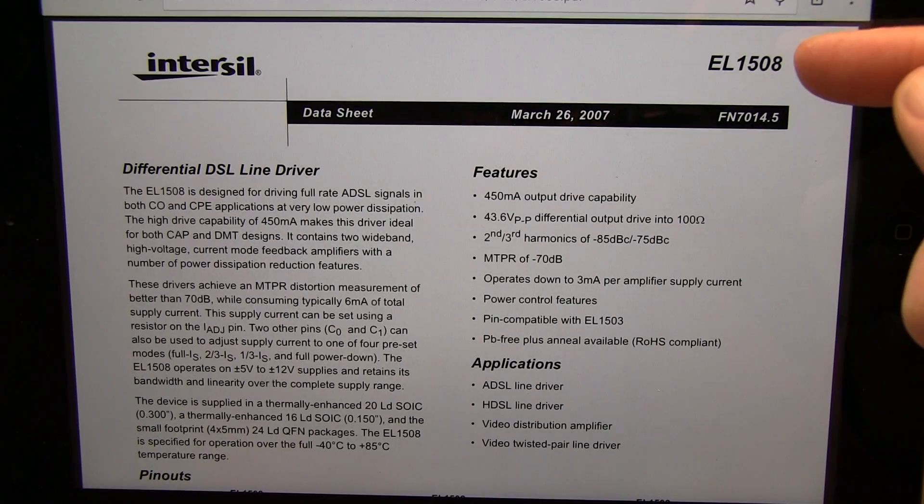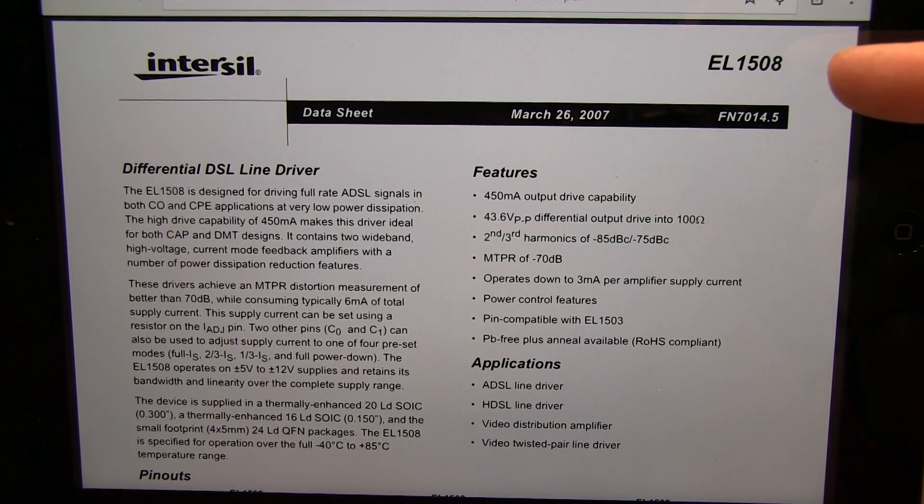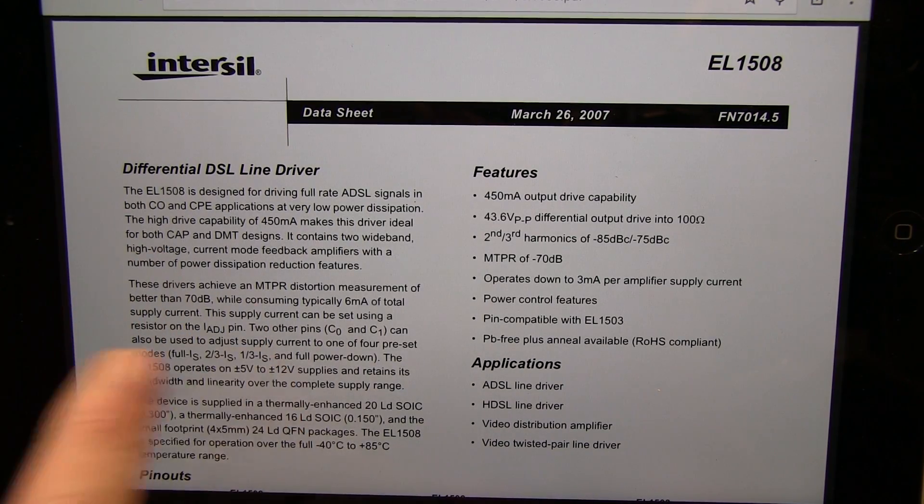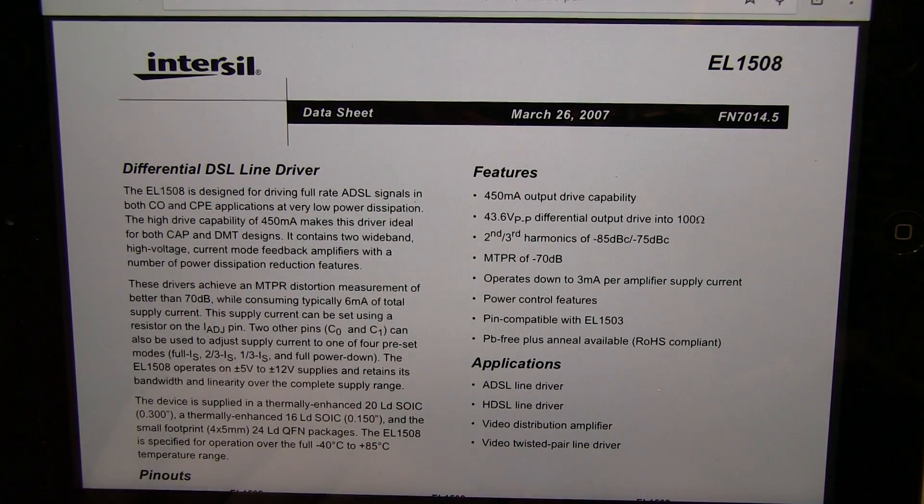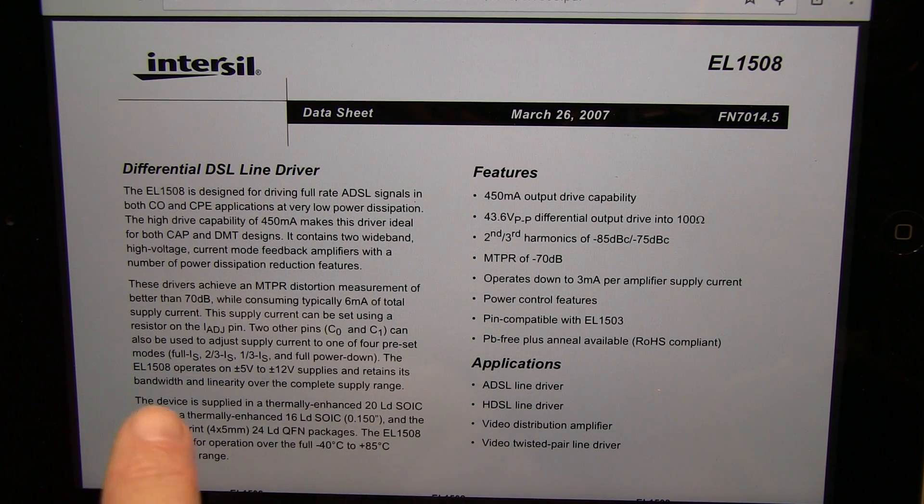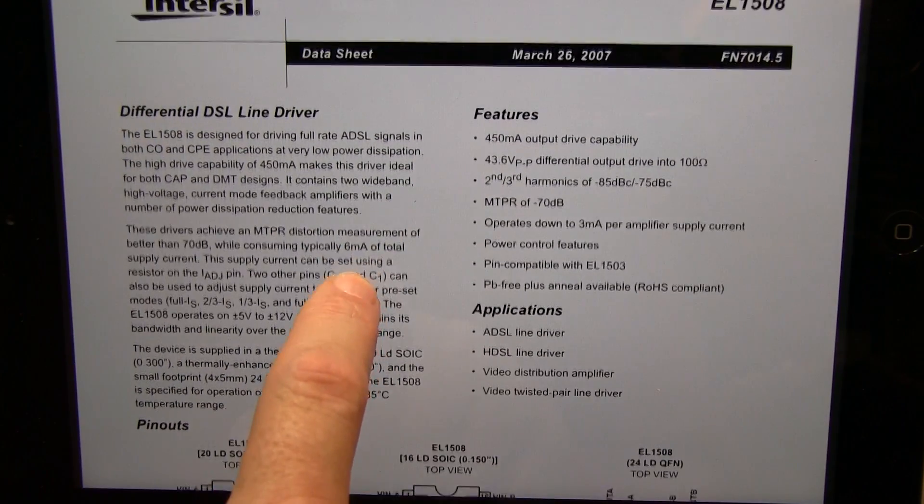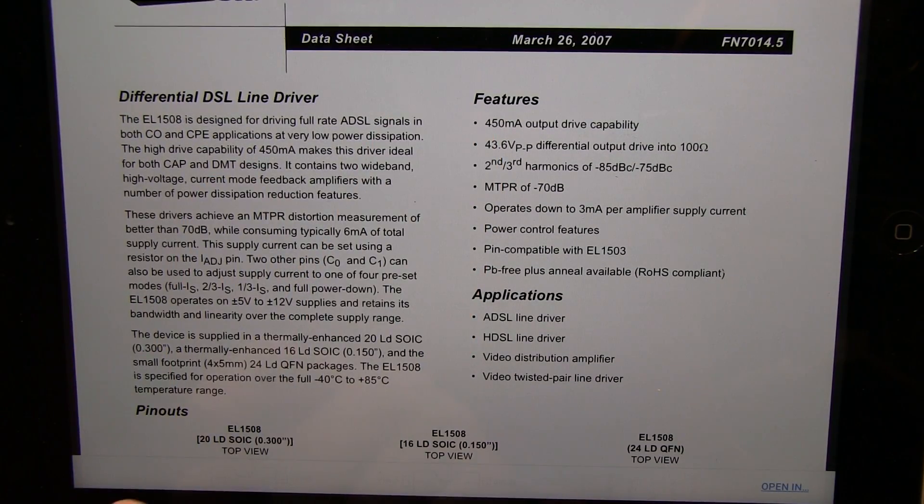So this EL-1508 is a differential DSL line driver, 450 milliamp output drive capability, and with the right power supplies can actually drive over 43 volts peak-to-peak differential into a 100-ohm differential load.